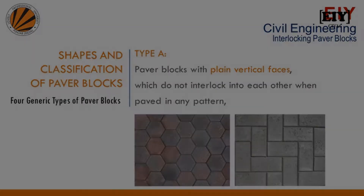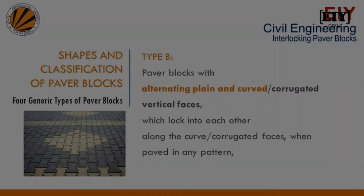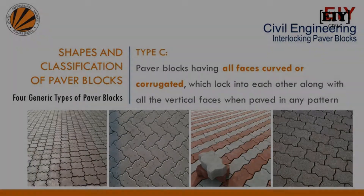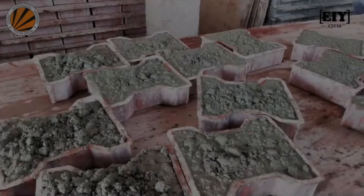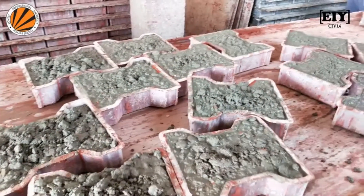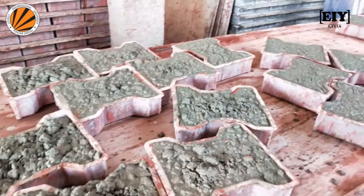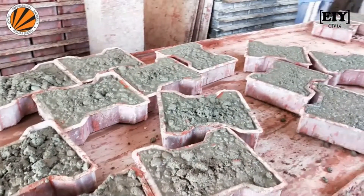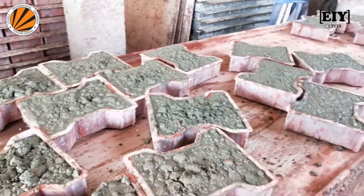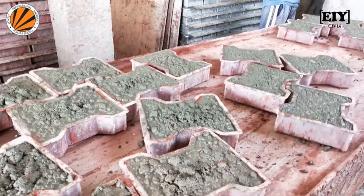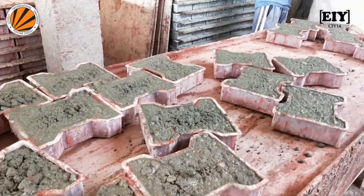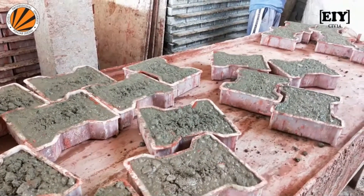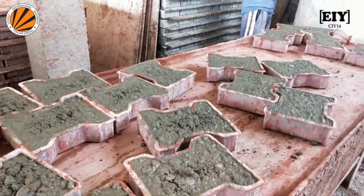Based on the interlocking capabilities of a paver block, they are classified into four generic types: Type A, Type B, Type C, and Type D. Compaction is the process which expels entrapped air from freshly placed concrete and packs the aggregate particles together so as to increase the density of concrete, significantly increasing its ultimate strength.